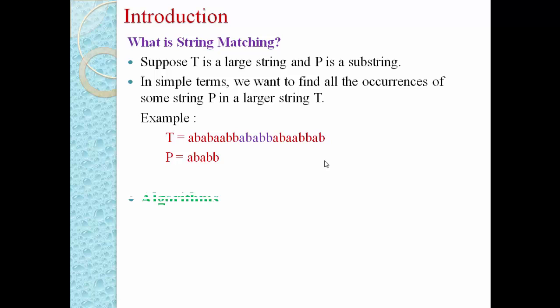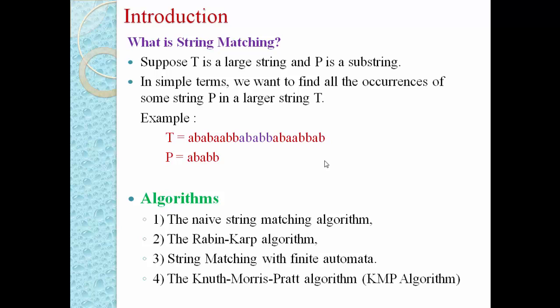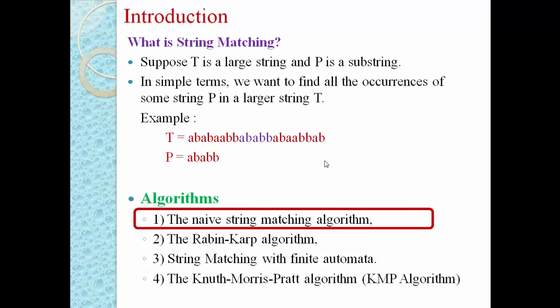There are a number of algorithms for string matching. First is the naive string matching algorithm, which is a classic brute force algorithm. Second is the Rabin-Karp algorithm. Third is string matching with finite automata. And fourth is the KMP algorithm. In today's video we will discuss the first classic algorithm, which is the naive string matching algorithm.